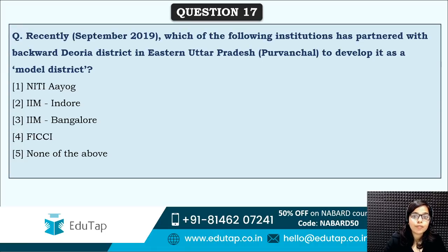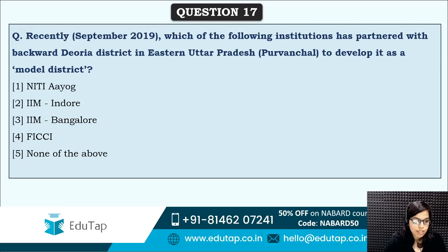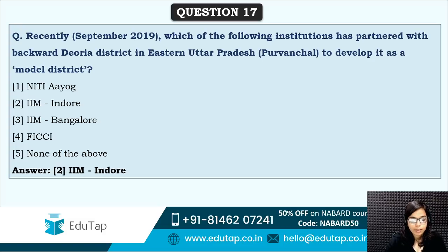Next: which of the following institutions has partnered with backward Deoria district in eastern Uttar Pradesh to develop it as a model district? Deoria district is in eastern UP and is going to be developed as a model district. The answer is option two — IIM Indore has partnered with this district to develop it as a model district.